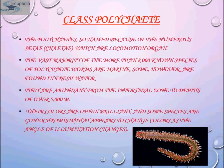Polychaetes are so named because of their numerous setae, which are locomotion organs. The vast majority of more than 8,000 known species of polychaete worms are marine, though some are found in freshwater. They are abundant from the intertidal zone to depths of over 5,000 meters. Their colors are often brilliant, and some species are goniochromism — a property where the apparent color changes with the angle of illumination or the angle of view.